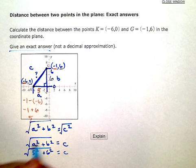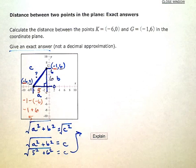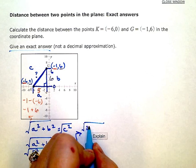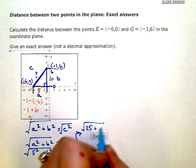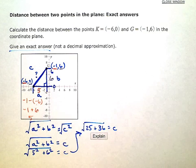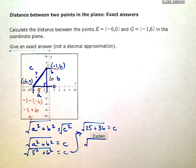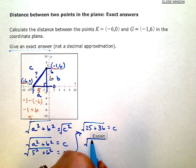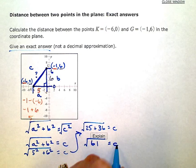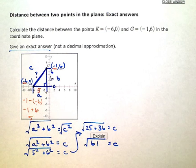I'm going to come up here for a little more room. So I'm going to have the square root of 5 squared is 25. 6 squared is 36. 25 plus 36 is 61. So c is the square root of 61. That's my exact answer.